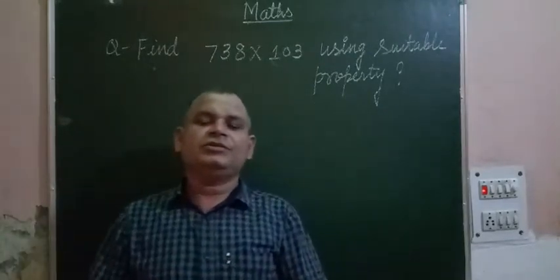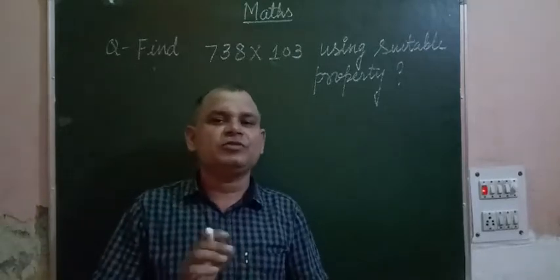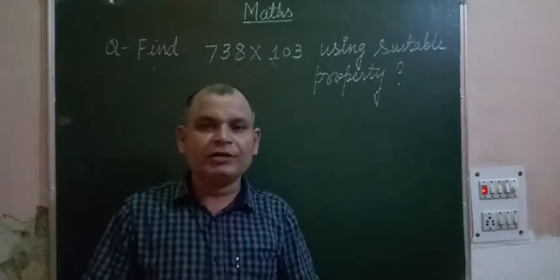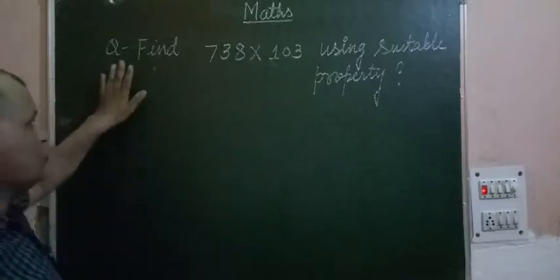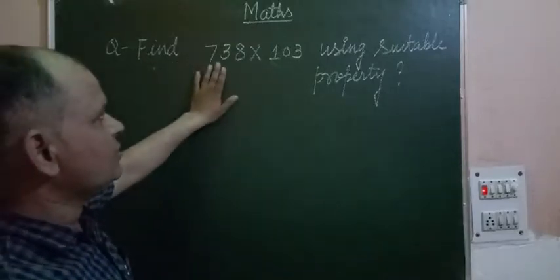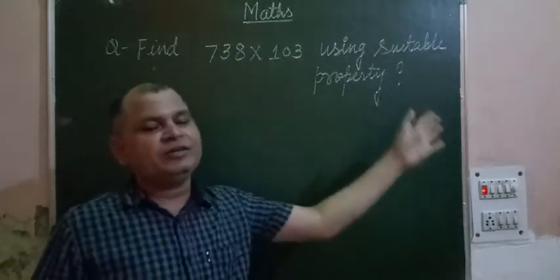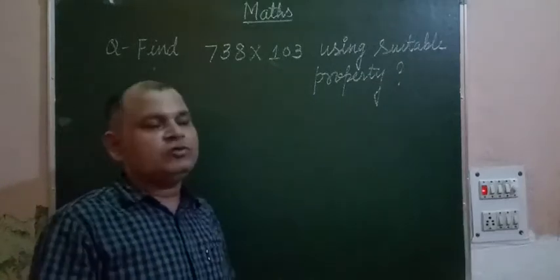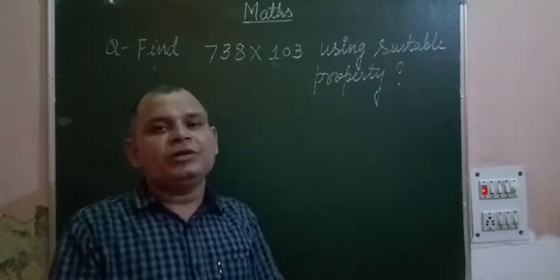Hello students, welcome to this YouTube channel. In this video we will solve a problem related to product or multiplication. The question is: find 738 multiplied by 103 using suitable properties. You know there are a few properties which are related to multiplication and addition of numbers.